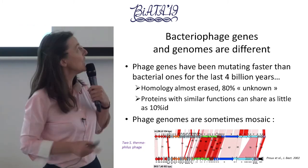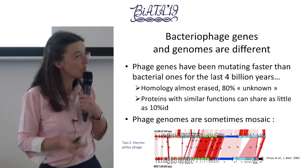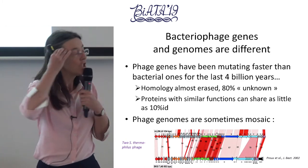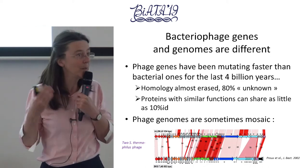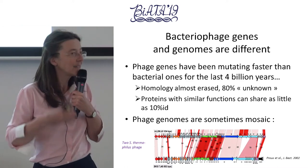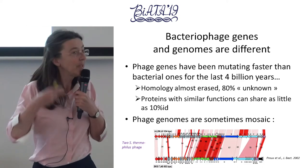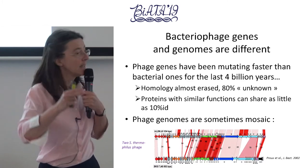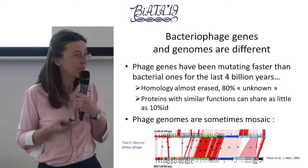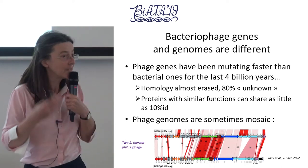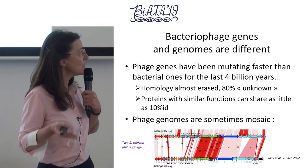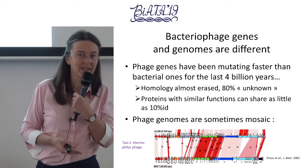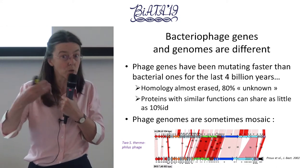Why? Because bacteriophages and their genes and genomes are just different. Phages have been mutating and evolving for the last four billion years together with bacteria, but at a higher speed. This speed of evolution has been so high that homology signals are sometimes almost erased. It's common to get 80% of phage genes with unknown function, and proteins with similar function can share as little as 10% identity. I'll show you why there are now tools that allow you to detect these relationships.